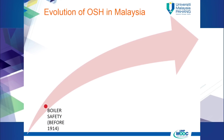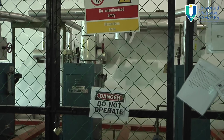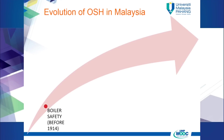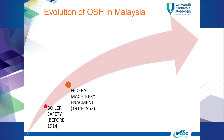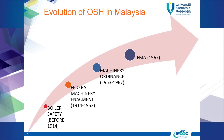The evolution of the legal framework of OSH in Malaysia was initiated by boiler safety before 1914. On the 1st January 1914, all the steam boiler enactments were replaced by the Federal Machinery Enactment. All the machinery enactments used before 1953 were then replaced by Machinery Ordinance 1953.